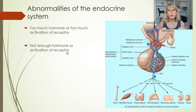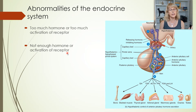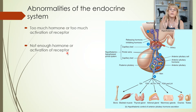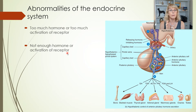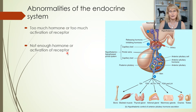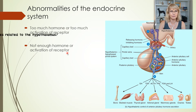Right now we're going to talk about how a patient's blood test would look if they had some kind of an abnormality of this part of their endocrine system — the part involving the hypothalamus and the anterior pituitary. We'll get to diabetes in a later video.